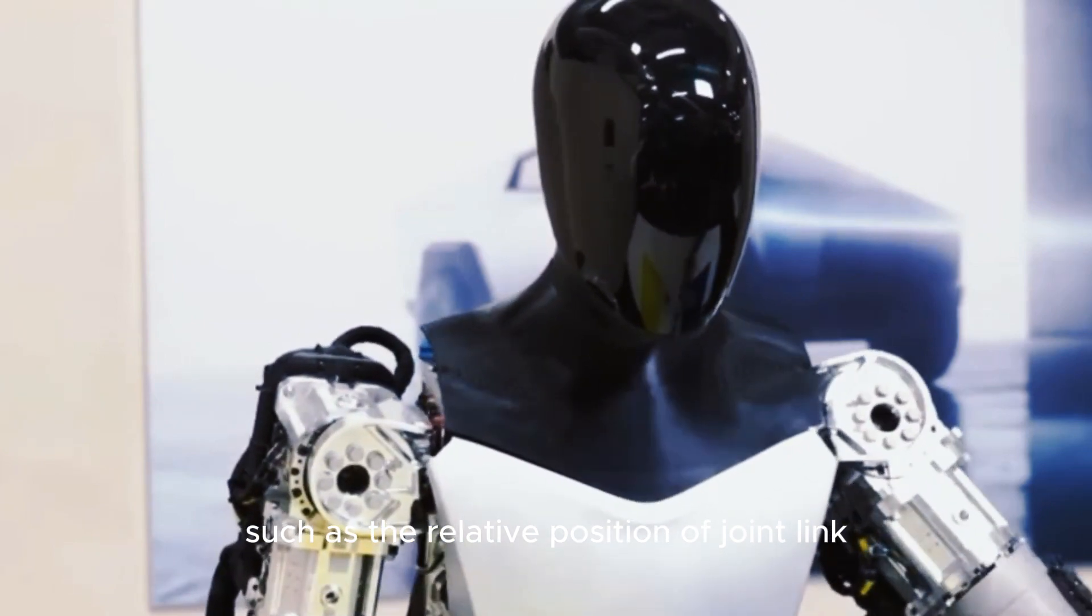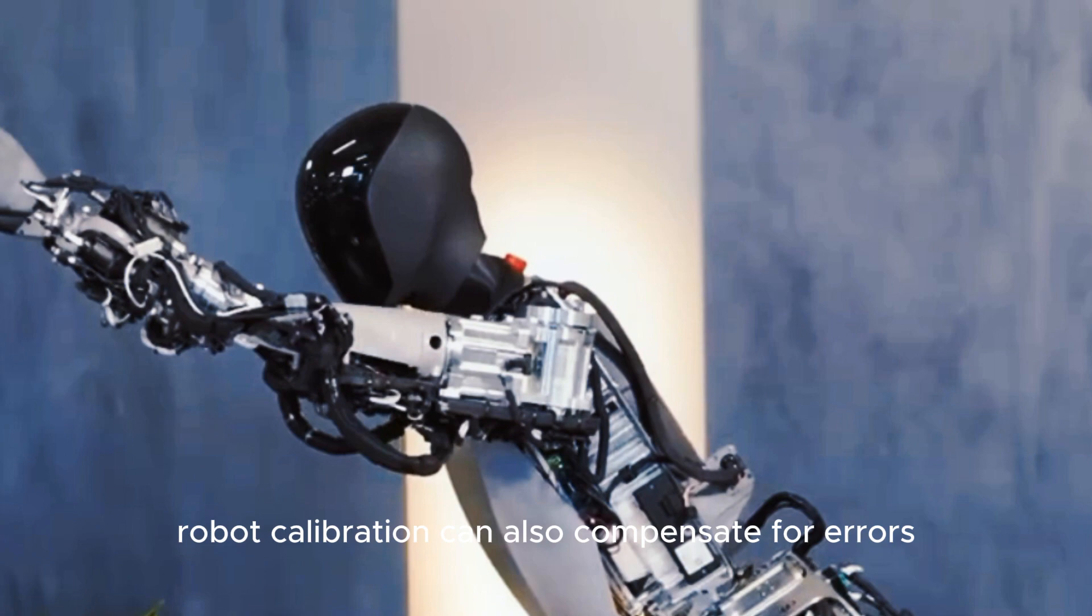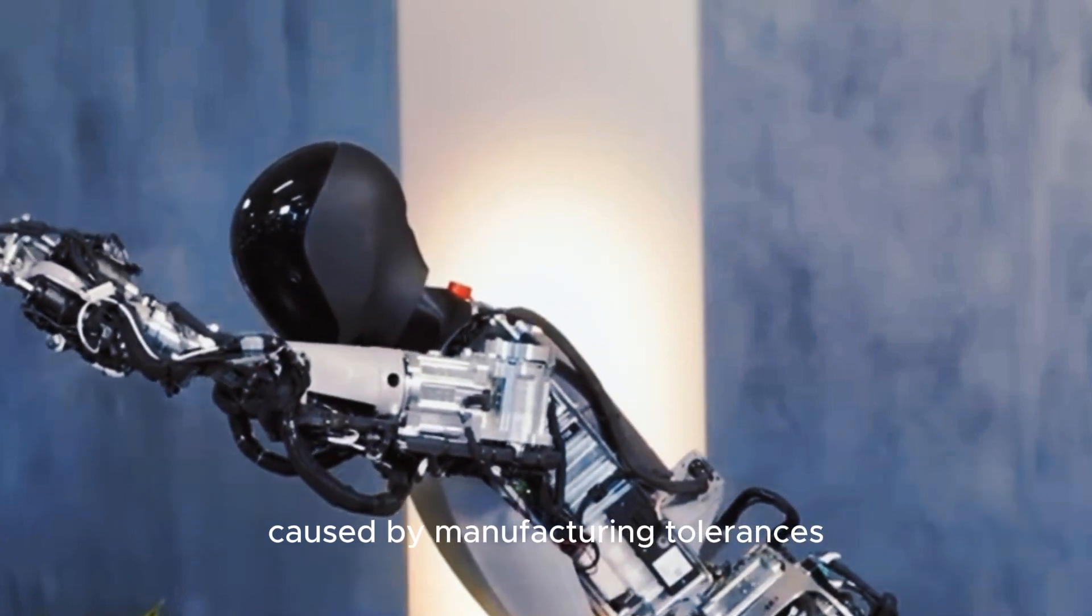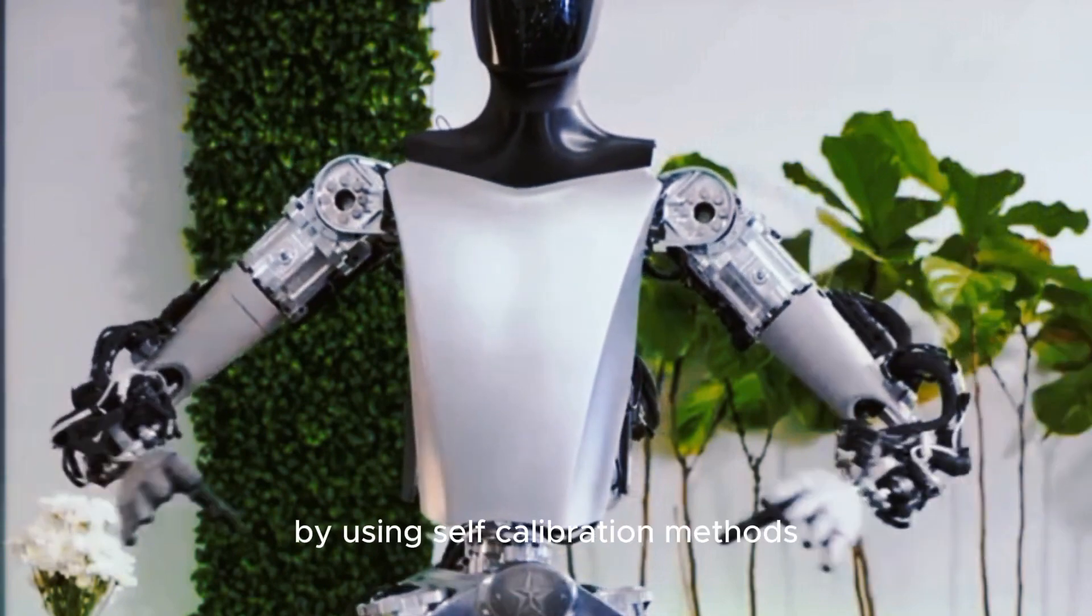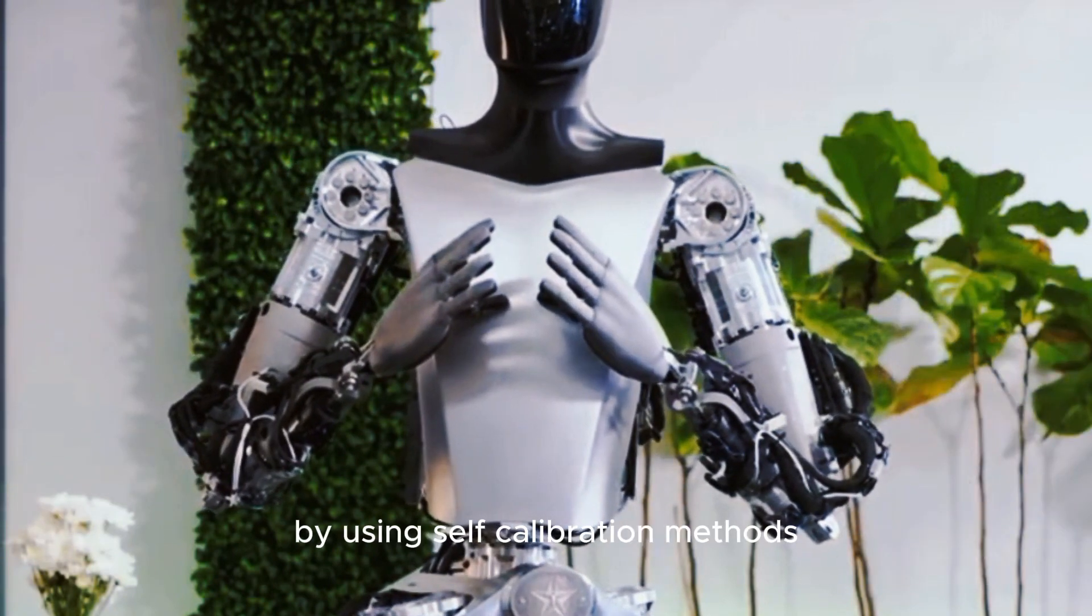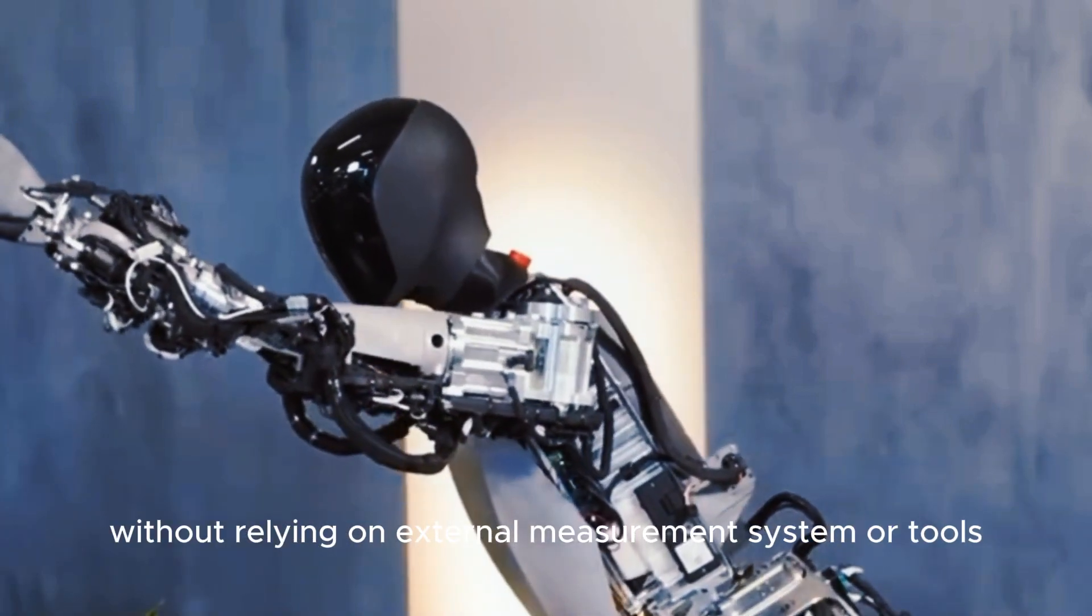Robot calibration can also compensate for errors caused by manufacturing tolerances, wear and tear, temperature changes, and other factors. By using self-calibration methods, robots can adjust their parameters without relying on external measurement systems or tools, which can be costly, time-consuming, or impractical in some situations.